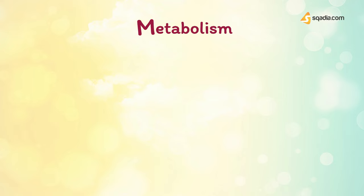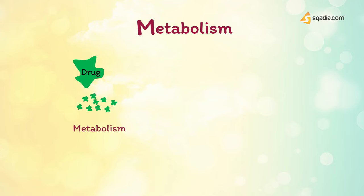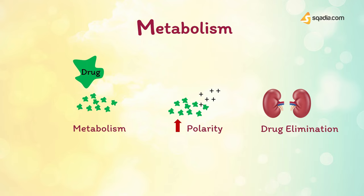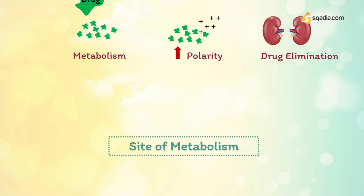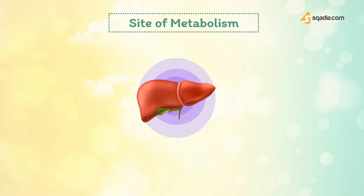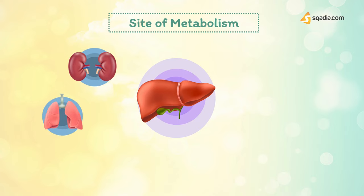Before being excreted from the body, most drugs are metabolized. Metabolism leads to production of products with increased polarity, which allows the drug to be eliminated. The liver is the major site of drug metabolism, although most tissues can metabolize specific drugs. Other sites of metabolism include the kidney, the lung, and the gastrointestinal tract. Diseases of these organs may therefore affect a drug's pharmacokinetics.